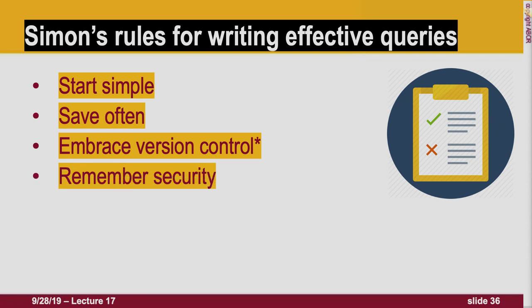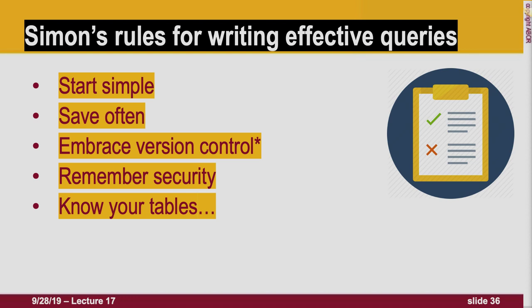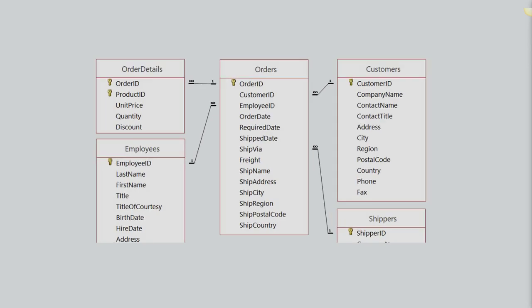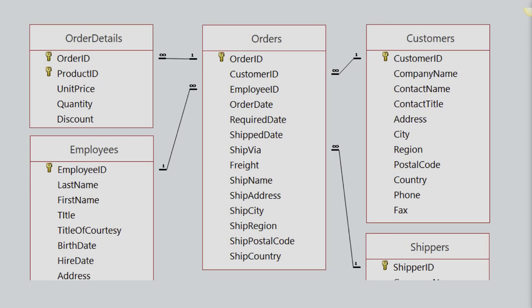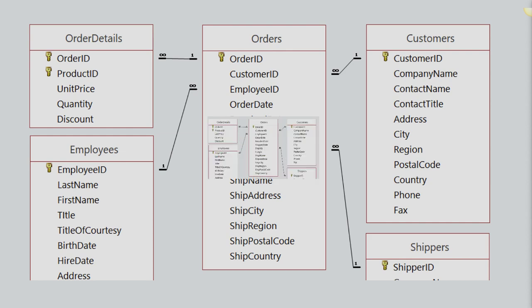Version control is a good thing. Also remember security — many organizations make the mistake of not securing their databases. If I write a query from a table with no security, I can access sensitive information like social security numbers, salaries, or home addresses from an employee table — that could get you in trouble. The biggest tip: know your tables. If you know where they are and how they're related, you can get from point A to point F — you might just have to take a few steps in between.